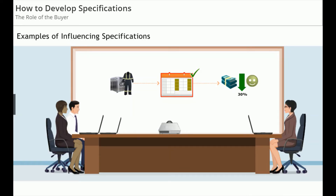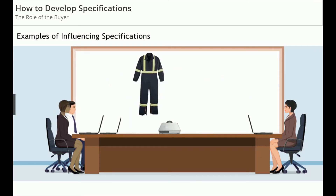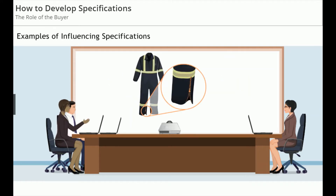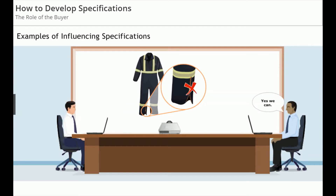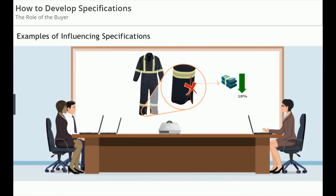Nice. Any others? The current specifications of our uniforms have a zipper on the bottom of each trouser leg. Adding that zipper increases the cost to manufacture the trousers. So you could question the budget holder on whether that extra zipper really improves performance. Now you've just taken another 10% off the cost of the uniforms, all without a single negotiation.